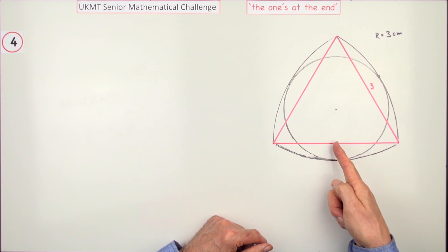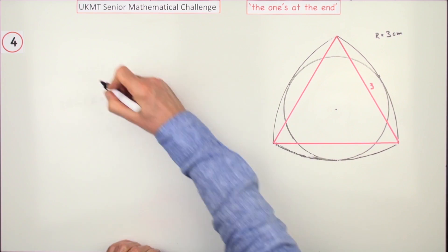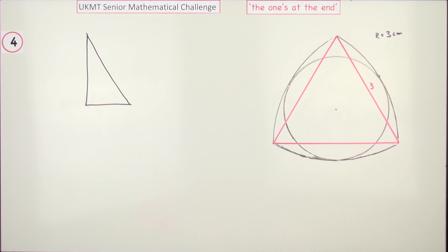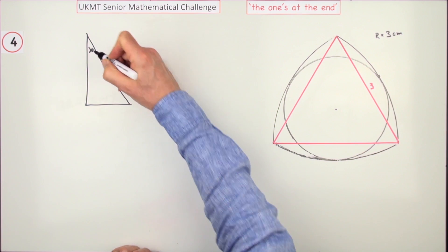Draw this axis of symmetry and you'll get a nice simple little triangle. That triangle, since it's equilateral, is going to have 30 degrees at the top.